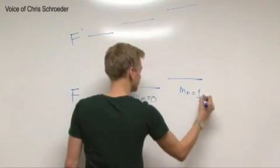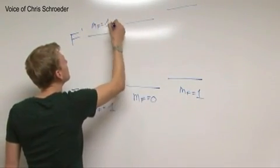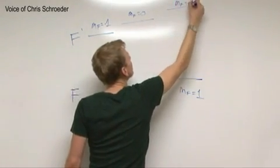We have an atom with this electronic energy level structure, two manifolds f and f prime, each with three Zeeman split sublevels with energy splitting delta E.